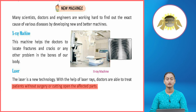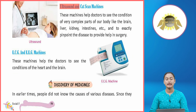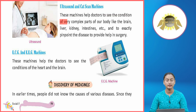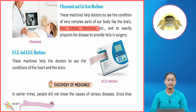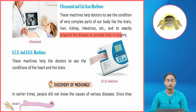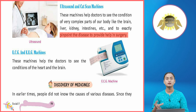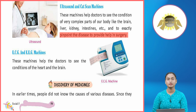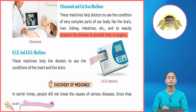Ultrasound and CAT Scan Machines: These machines help doctors to see the condition of very complex parts of the body like the brain, liver, kidney, intestines, etc., and to exactly pinpoint the disease to provide help in surgery. Ultrasound and CAT scan machines help doctors observe internal organs like the liver, kidney, and intestines and identify precisely what is causing the problem.